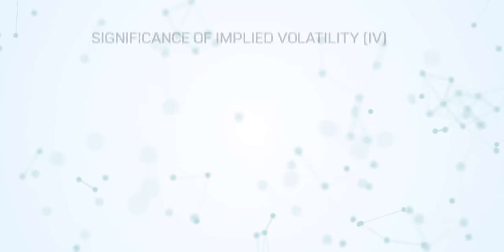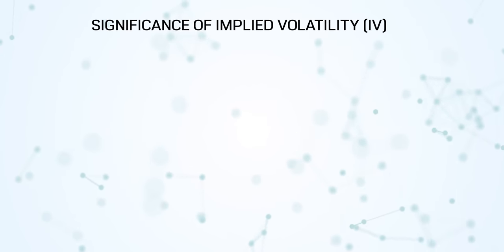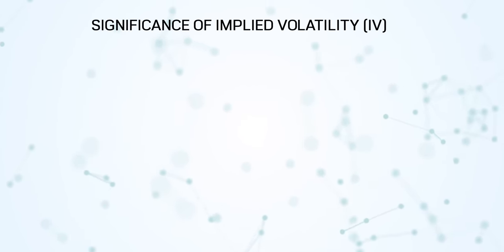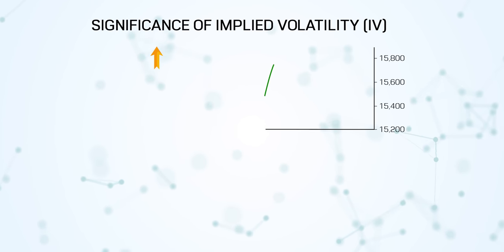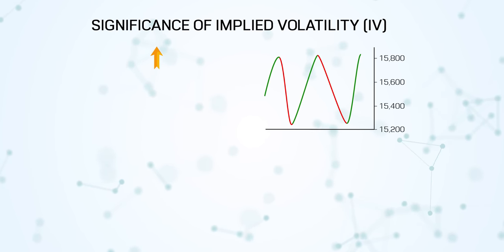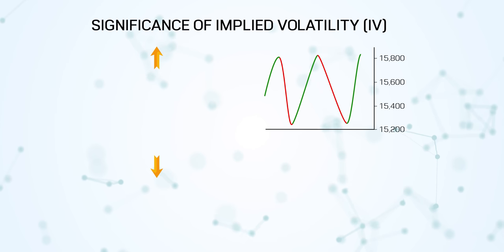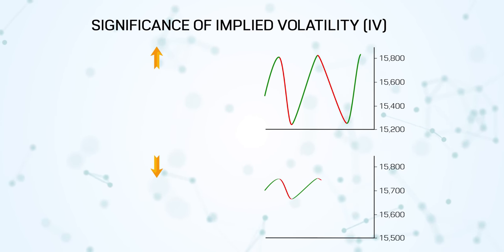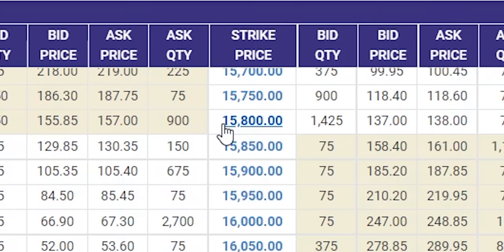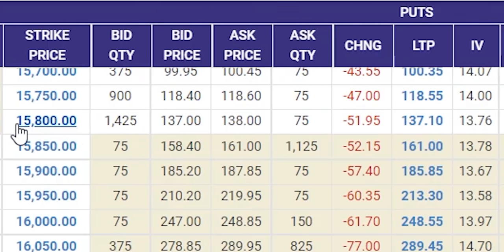The significance of IV is very simple: if IV is very high, the market is expected to make a bigger move; if IV is low, the market is expected to make a smaller move. But then the next question comes — looking at the Nifty 15,800 put option, the IV is around 14. Is this IV low or high? How do we know?